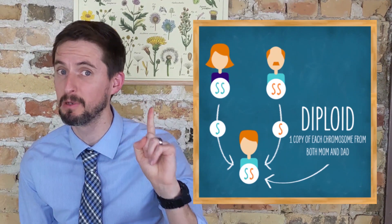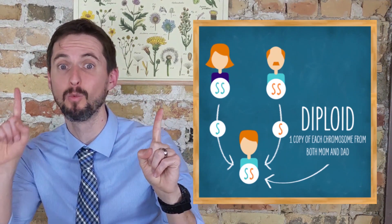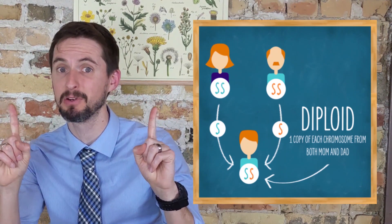Hi there! If you are a human, and many of you are, then you are an example of a diploid organism. Diploid means that you have two of each type of chromosome that you possess. You got one copy of each chromosome from your mom and one copy from your dad.